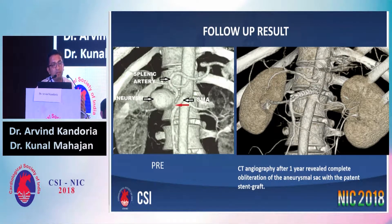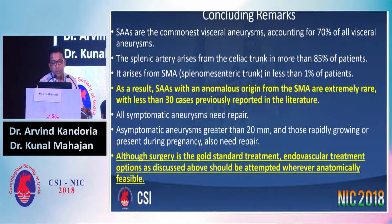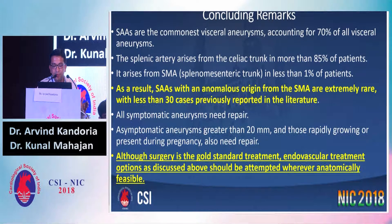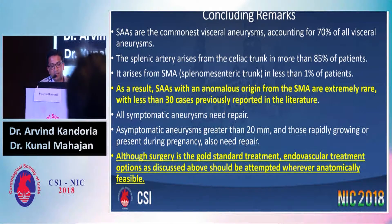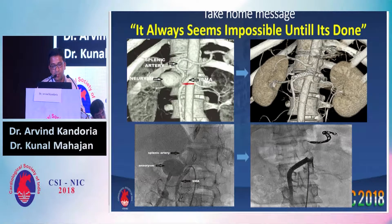This was the follow-up result. We got a CT done one year later. You can clearly see the pre- and post-procedure pictures — after one year of follow-up, there was no evidence of the aneurysm, which had markedly shrunk. In conclusion, splenic artery aneurysms are the commonest visceral aneurysms. When the splenic artery arises from the SMA, it occurs in only less than 1% of patients, and splenic artery aneurysm with anomalous origin from the SMA is extremely rare, with less than 30 cases reported in the literature. All treatment options, with surgery as the gold standard, should be attempted wherever anatomically feasible. The take-home message: it always seems impossible until it is done. Thank you.